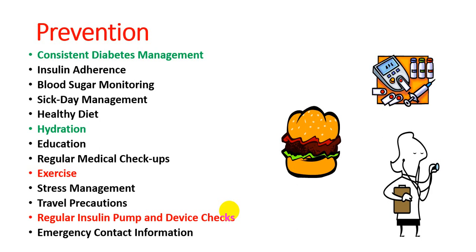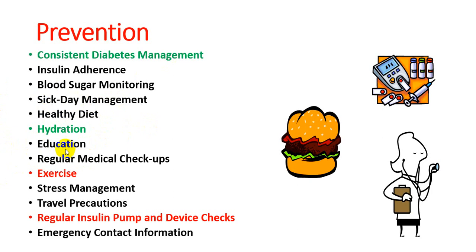Prevention focuses on consistent diabetic management including blood glucose measurements and insulin adherence — giving the proper dose at the proper time. Blood sugar monitoring through regular checkup is important. Sick day management means consulting a physician when any disturbance occurs in the body. A low-sugar diet is important, avoiding sugary foods. Proper hydration should be maintained during sickness and on normal days.